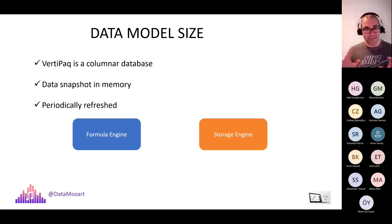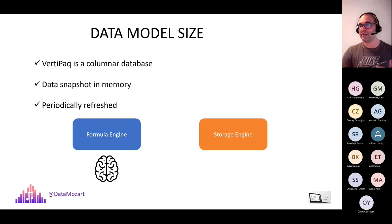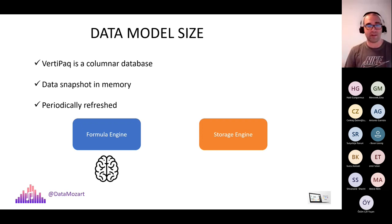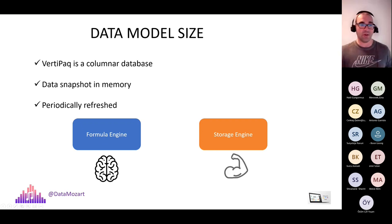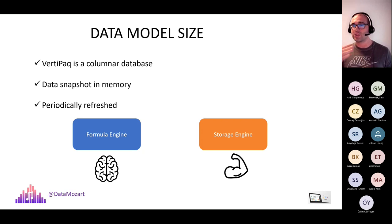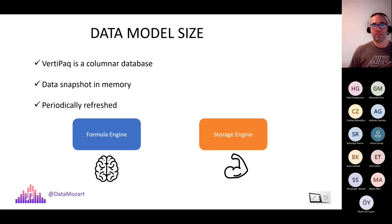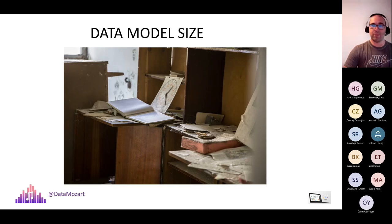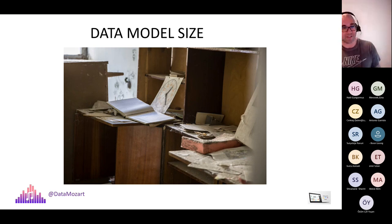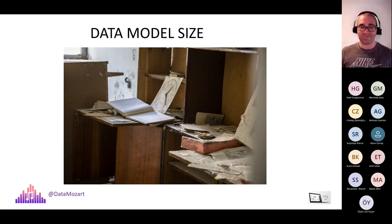To understand what affects your data model size, we need some theoretical background. When you choose import mode in Power BI, data is stored in a columnar database called VertiPaq. VertiPaq keeps a snapshot of your data in cache memory, which can be refreshed periodically from the original data source. You should be able to distinguish between the formula engine and the storage engine — two key components of this underlying architecture. The formula engine is the brain of Power BI: it translates your DAX to a query plan with physical operations such as joins, segregations, and filtering. The storage engine is the muscles — it physically goes through the data stored in the tabular model. If the storage engine needs to dig through massive amounts of data, it will obviously need more time and resources.